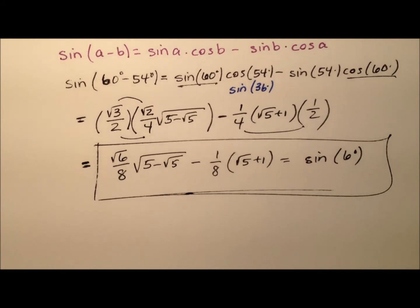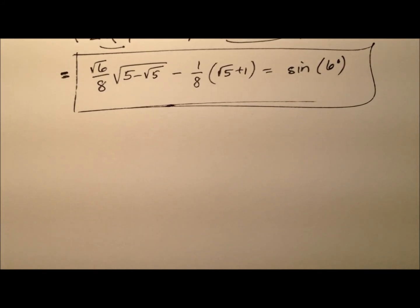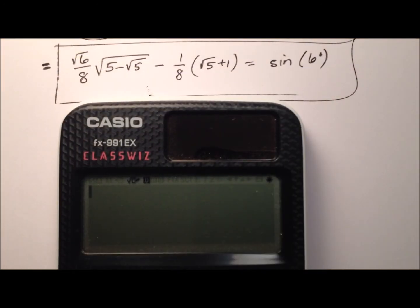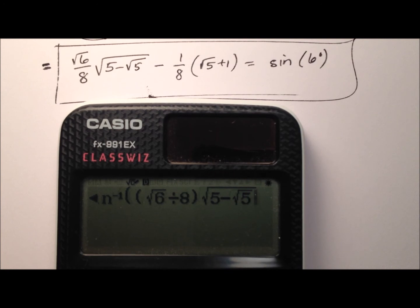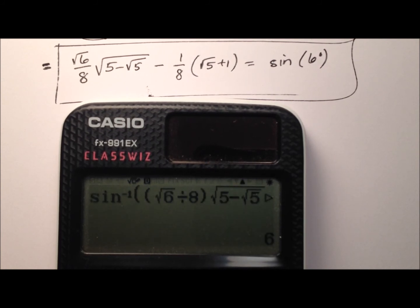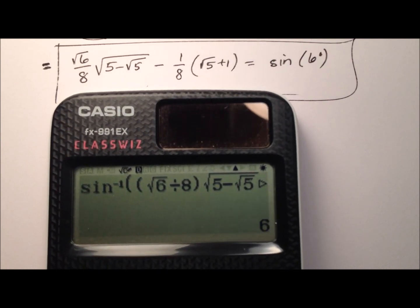Not a lot of other simplification we can do. So at this point, let's go ahead and grab our calculator and see if this works out. We're going to say the inverse sine, and we'll put this ratio in there. So we have first the square root of 6 divided by 8, and I'm going to multiply that by the square root expression that I have there. And then from that I'm going to subtract this 1 eighth multiplied by the square root of 5 plus 1, and close off those parentheses, and it equals 6 degrees. So it does work.